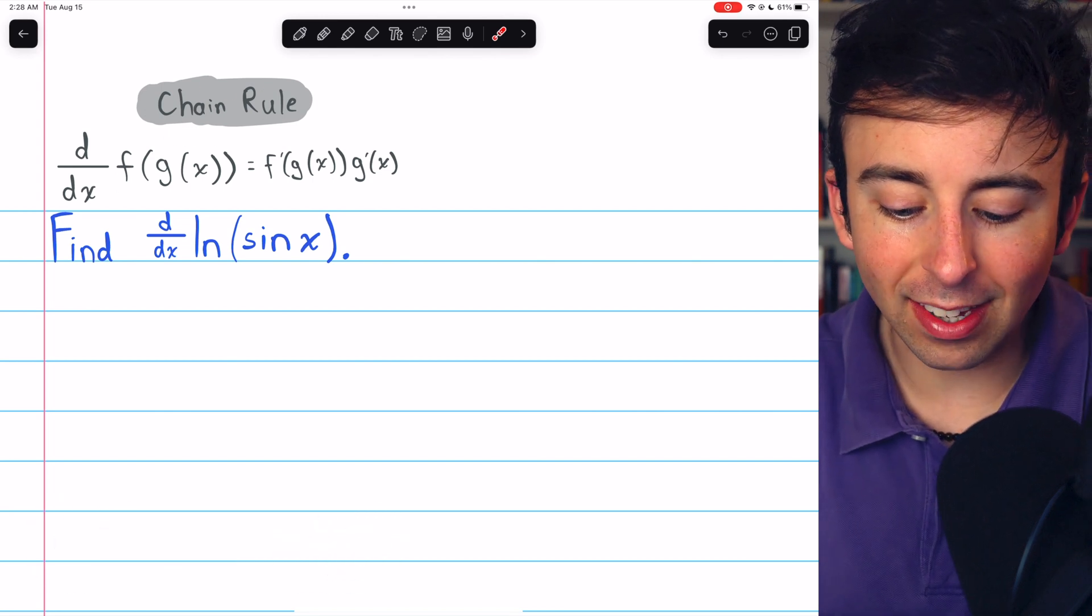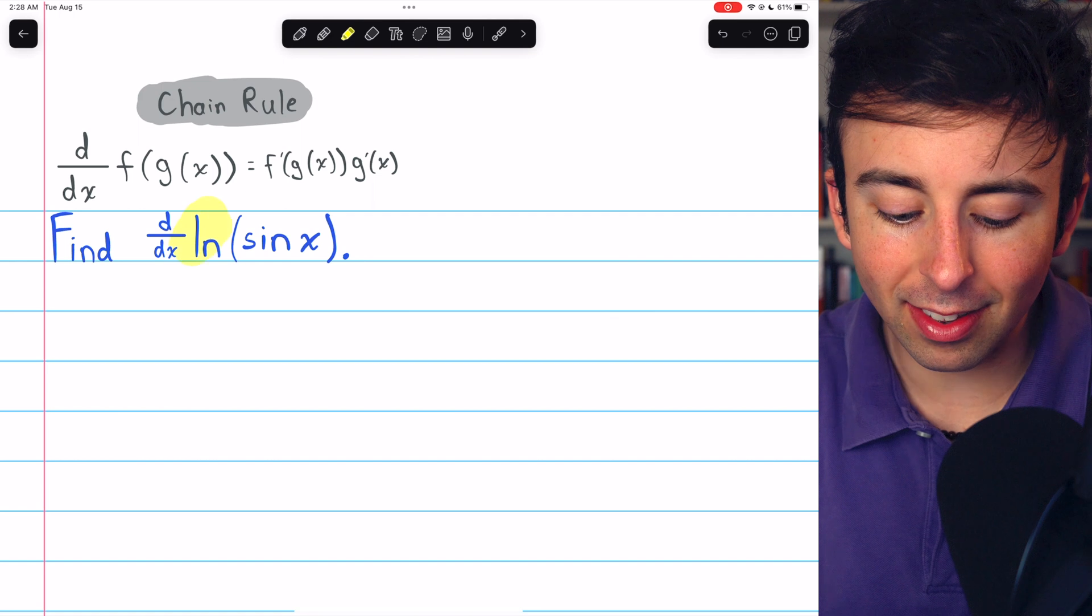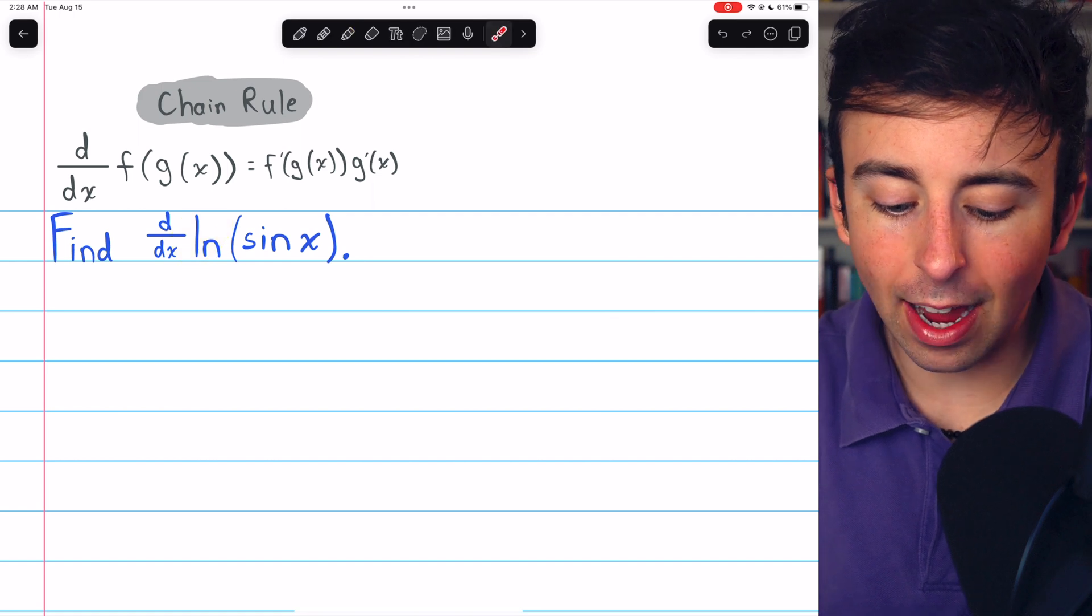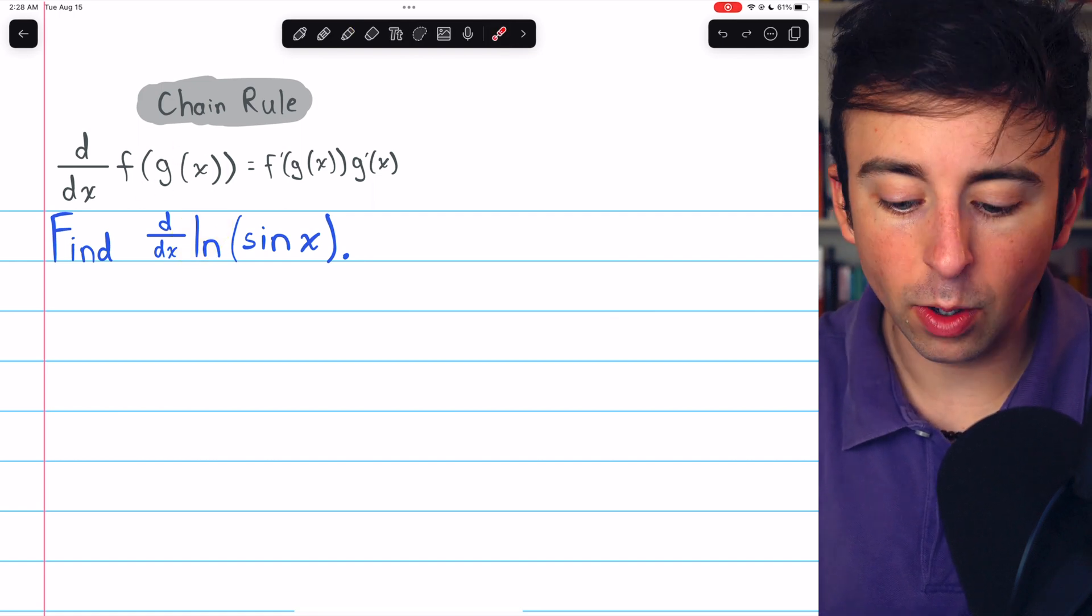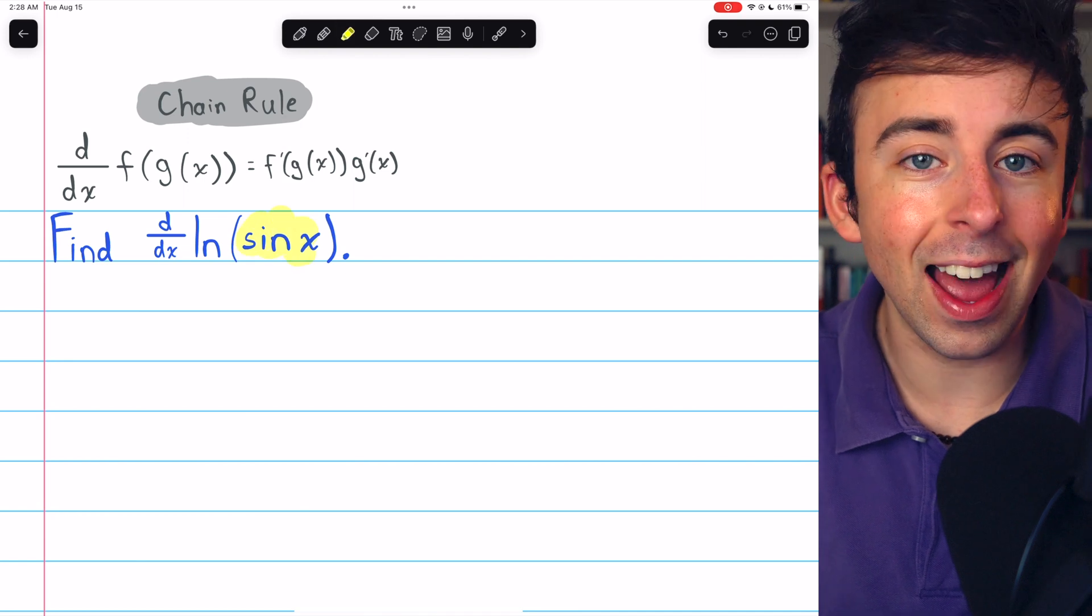The outside function is f, which in this case is the natural log. The inside function is g, which in this case is sine x.